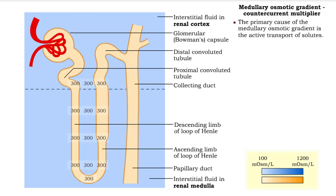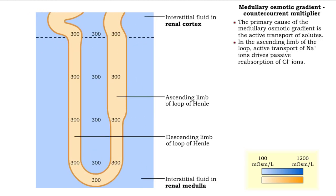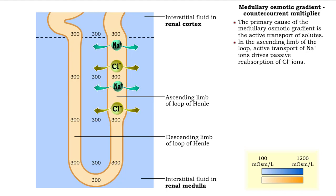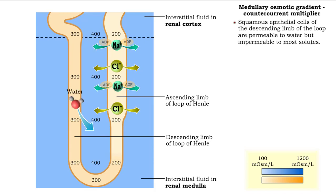The primary cause of the medullary osmotic gradient is the active transport of solutes. In the ascending limb of the loop, active transport of sodium ions drives passive reabsorption of chloride ions. The addition of these ions to the interstitial fluid of the medulla increases its osmolarity. The simple squamous epithelial cells of the descending limb of the loop are permeable to water but impermeable to most solutes.